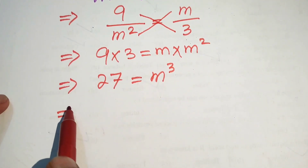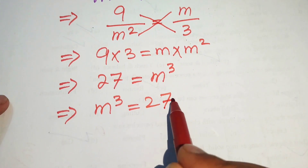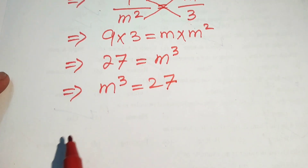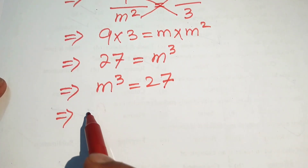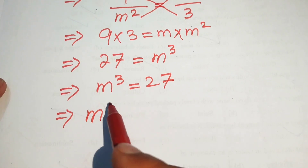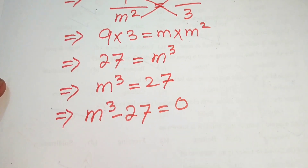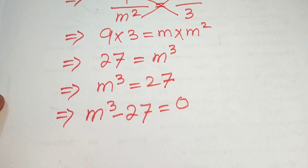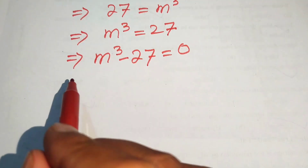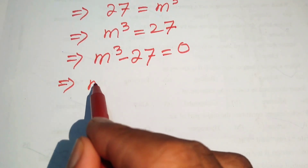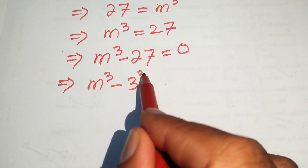So we write this expression as m cubed equals to 27, and we move 27 to the left hand side, giving us m cubed minus 27 equals to 0. Here we note that 27 equals 3 cubed.